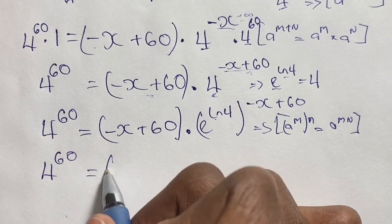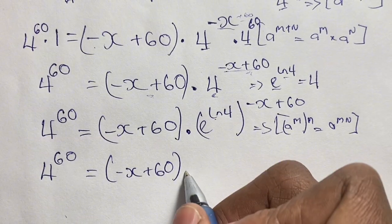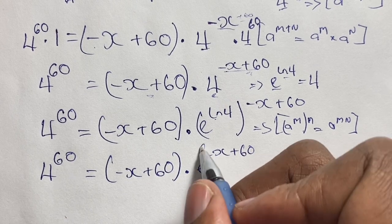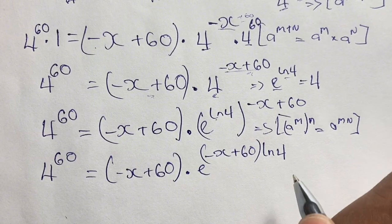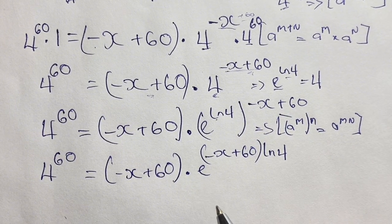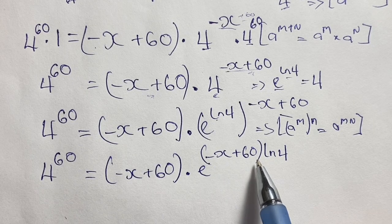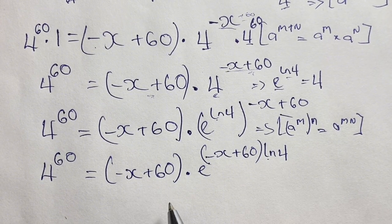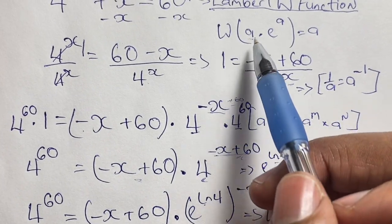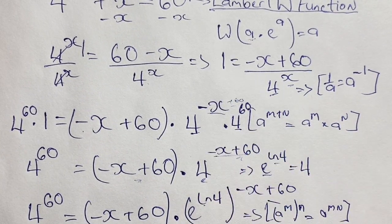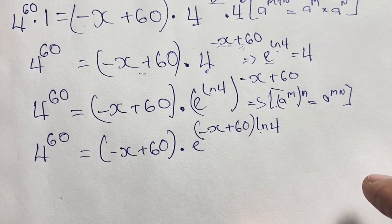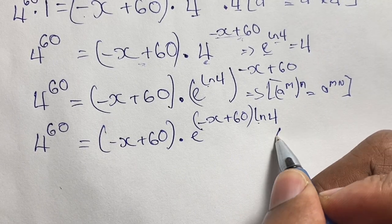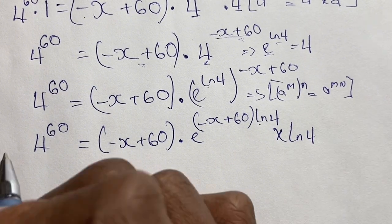So we have 4 to the power of 60 equals negative x plus 60 in brackets times e to the power of negative x plus 60 times ln 4. Observing the expression, the base has negative x plus 60 but is missing ln 4 as a multiplier. We resolve this by multiplying both sides of the equation by ln 4, so on the left we have ln 4 times 4 to the power of 60.